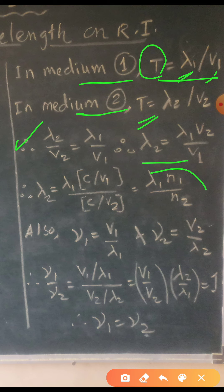Again, this can be written in this fashion by using this idea — that is, dividing and multiplying by C, the speed of light. Rearranging, we get lambda 2 is equal to lambda 1 times N1 upon N2, where N1 and N2 are the absolute refractive indices — that is, the refractive index of medium 1 with respect to vacuum, and refractive index of medium 2 with respect to vacuum. Thus, according to this relation, it is clear that lambda 2 is less than lambda 1.